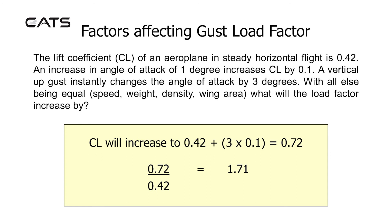Worked example: the lift coefficient CL of an aeroplane in steady horizontal flight is 0.42. An increase in angle of attack of 1 degree increases CL by 0.1. A vertical up gust instantly changes the angle of attack by 3 degrees. With all else equal (speed, weight, density, wing area), what will the load factor increase by? CL will increase to 0.42 plus (3 × 0.1) = 0.72. To find the increase, divide 0.72 by the original 0.42 to get a load factor increase of 1.71.